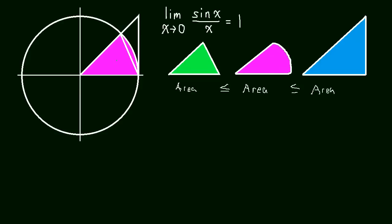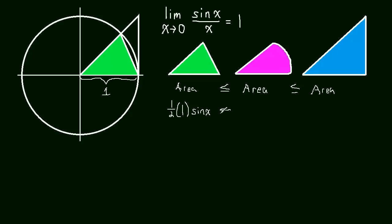Let's go to the first triangle. The area of this triangle is going to be one half base times height. This is the unit circle, so the radius is 1. If this is the angle x, then sin x equals the height of this triangle. So the area is one half times the base, which is 1, times the height, which is sin x. That is less than or equal to these other areas.